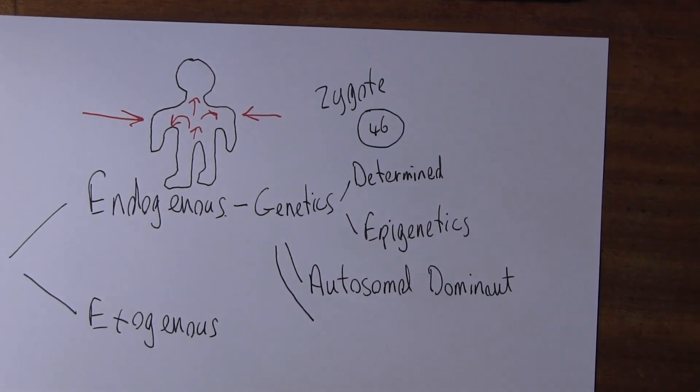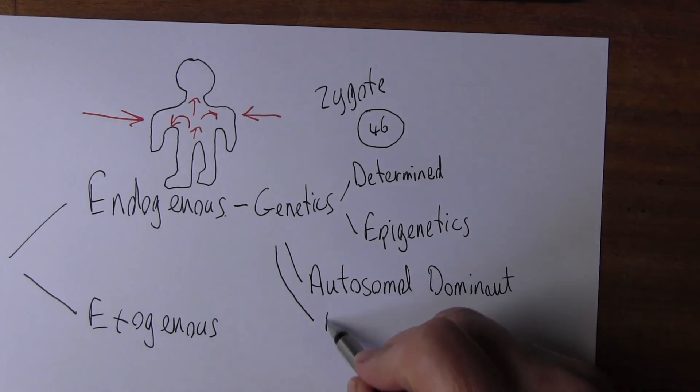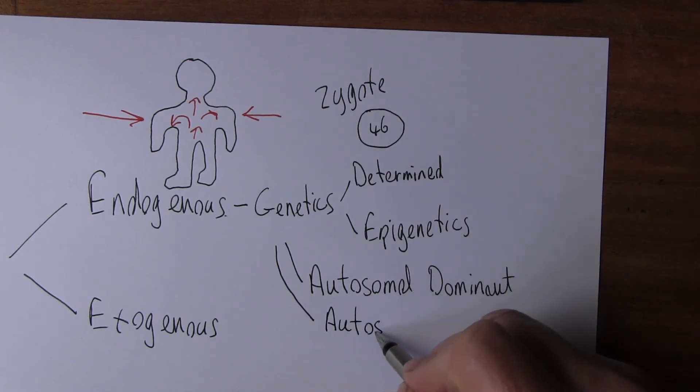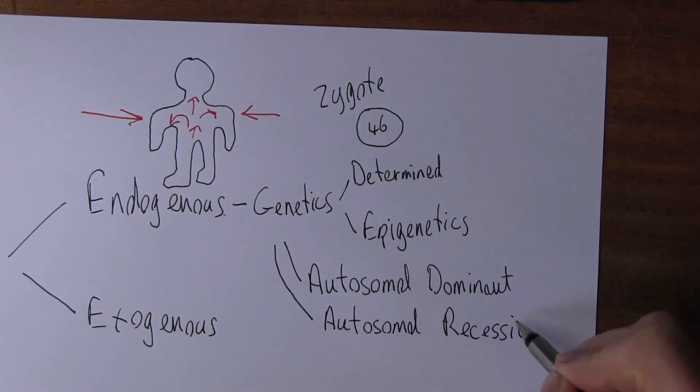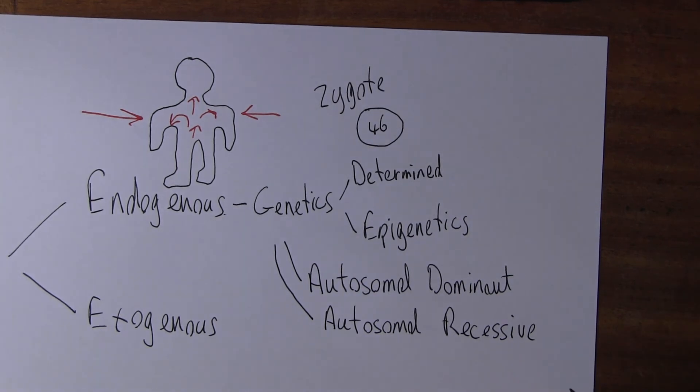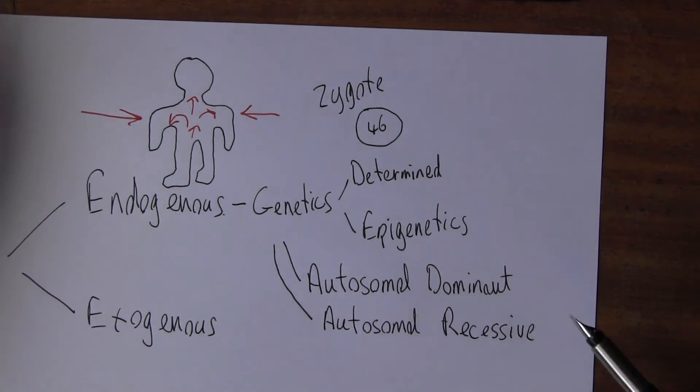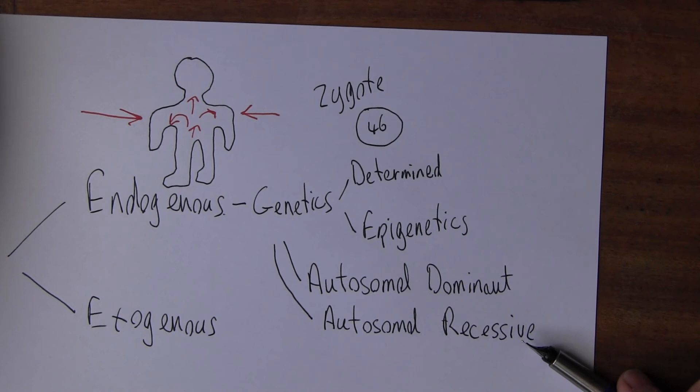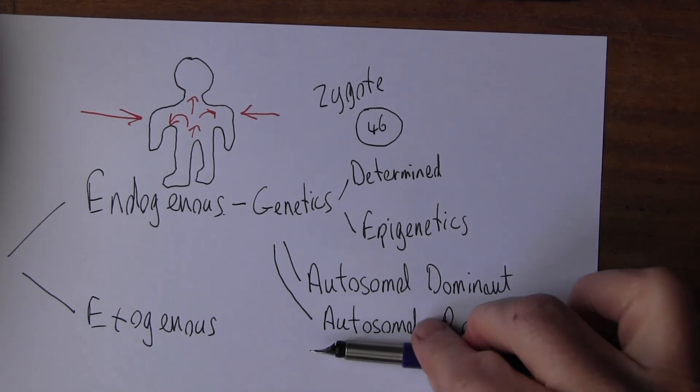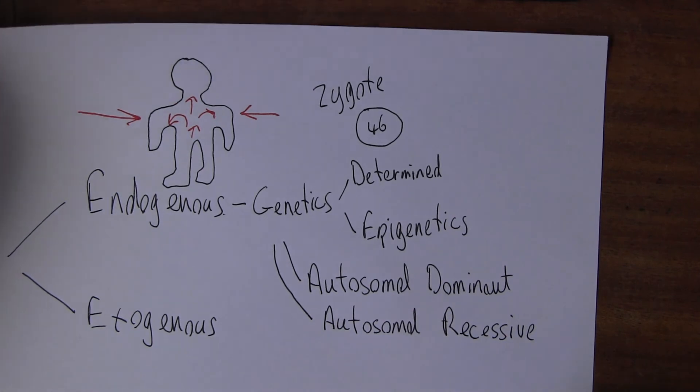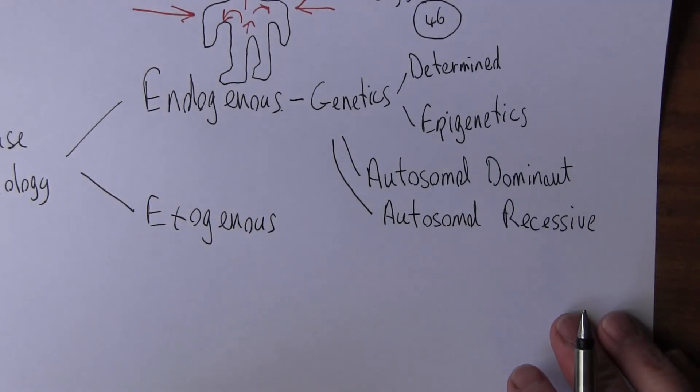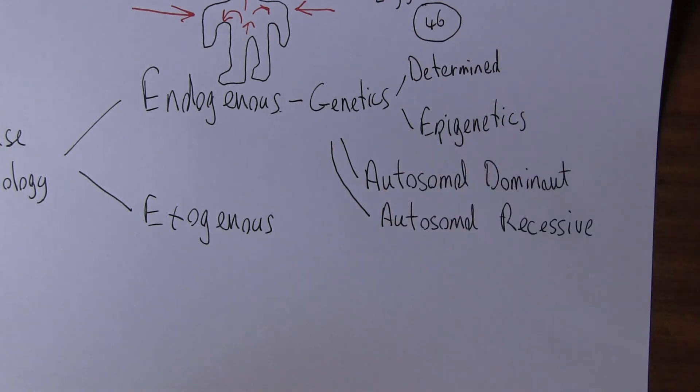Then there's autosomal recessive. The autosomal recessive disorders will only be expressed in the absence of a dominant gene. Typically both parents need to carry the recessive gene and one in four of their children will suffer from the condition or demonstrate that trait. If you want more details on these there are videos that go into these in much more detail.